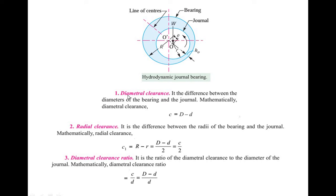The first term is diametral clearance. It is the difference between the diameters of the bearing and the journal. Mathematically, it is given by small c equal to capital D minus small d, where capital D is the diameter of the bearing and small d is the diameter of the journal.